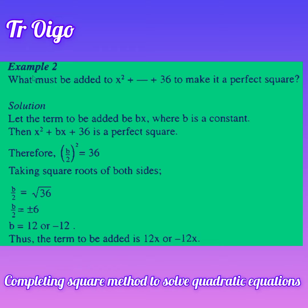As students, I want us to go through this particular question together. The question says: what must be added to x squared plus dash plus 36 to make it a perfect square?